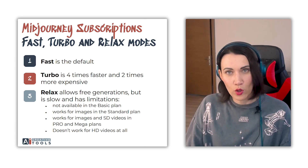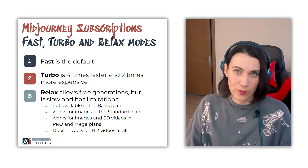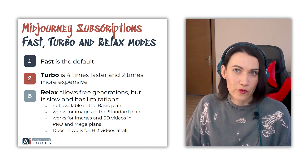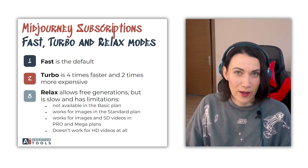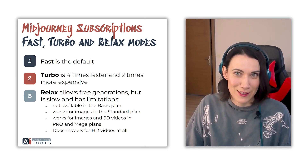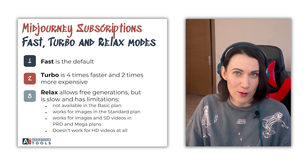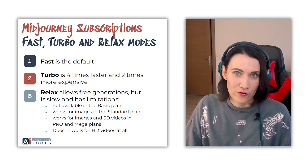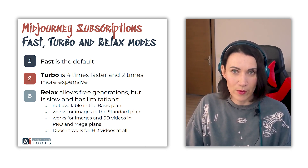Relax mode is not available at all on the Basic plan, works only for images on the Standard plan, and works for images and SD videos on the Pro and Mega plans. It doesn't work for HD videos at all. Keep in mind that slow really means slow — sometimes you can wait up to 10 minutes for an image grid. Relax mode also has other limitations; for example, you can't use Permutation prompts or the Repeat parameter.